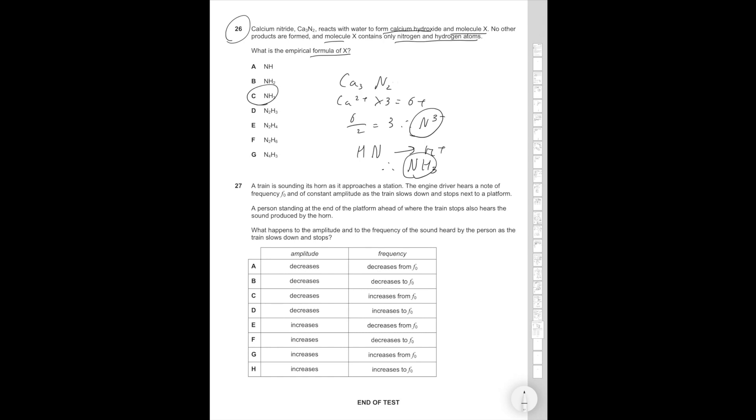Question 27. A train is sounding its horn as it approaches the station. The engine driver hears a note of frequency F0 and of constant amplitude as the train slows down and stops next to a platform. A person standing at the end of the platform ahead of where the train stops also hears the sound produced by the horn. What happens to the amplitude and to the frequency of the sound heard by the person as the train slows down and stops? The amplitude, if you think about it, the horn is getting closer to the person. So the amplitude is going to increase. And the frequency is going to be decreasing to F0. So F0 is the original frequency. And as the train is further away, the perceived frequency that the person is hearing is going to be higher. So the frequency would gradually decrease to its actual frequency, which is F0. So therefore, the correct answer option is answer option F.